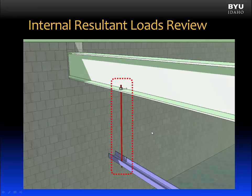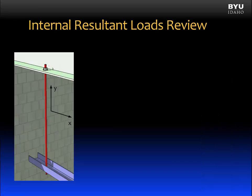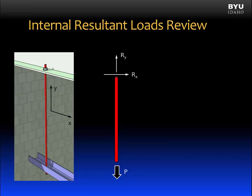What I want to do is look at the internal resultant loads. I'm going to start with a free body diagram of the entire rod. There's a load at the lower end and a support at the top. We can represent that support, which is just a nut, with two forces: a resultant force in the x direction or a resultant force in the y direction.